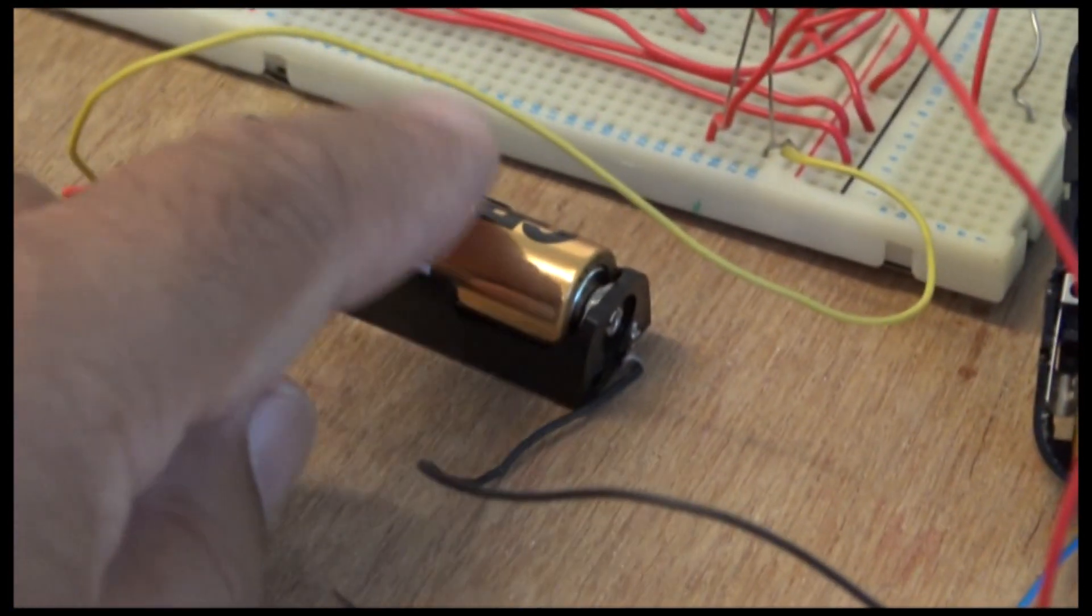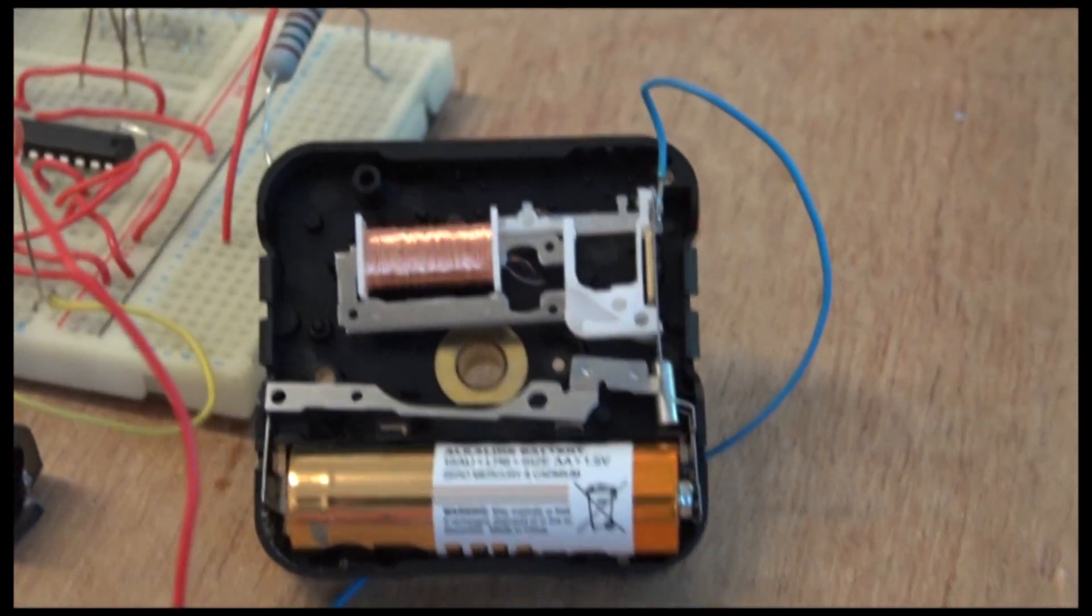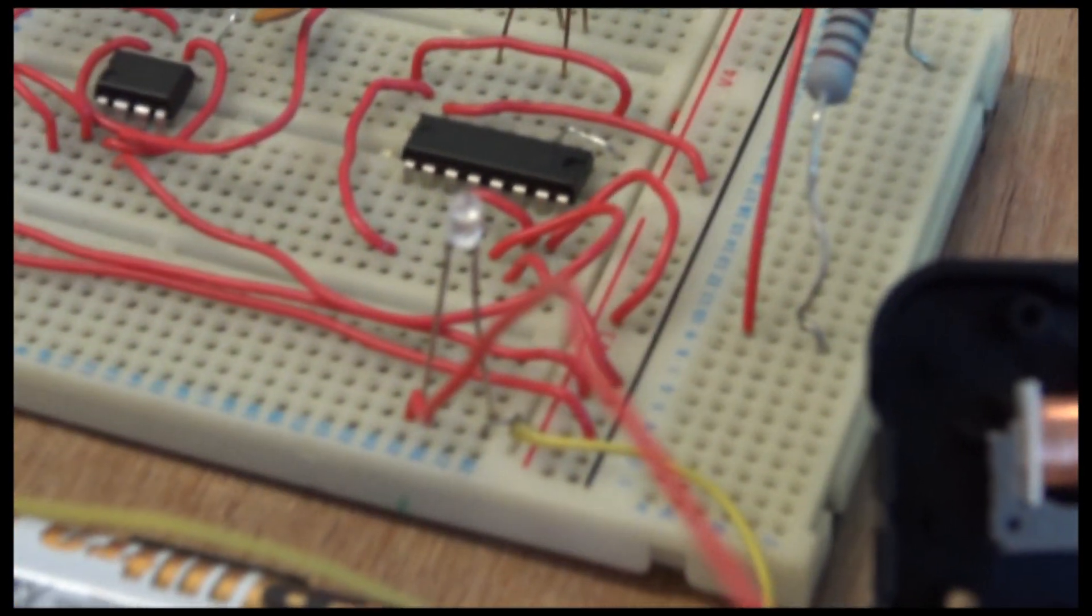So the coil is disconnected, ignore that. I'll be just using the circuitry. The blue lead is connected to the negative side of this external battery which I've got, which supplies three volts.